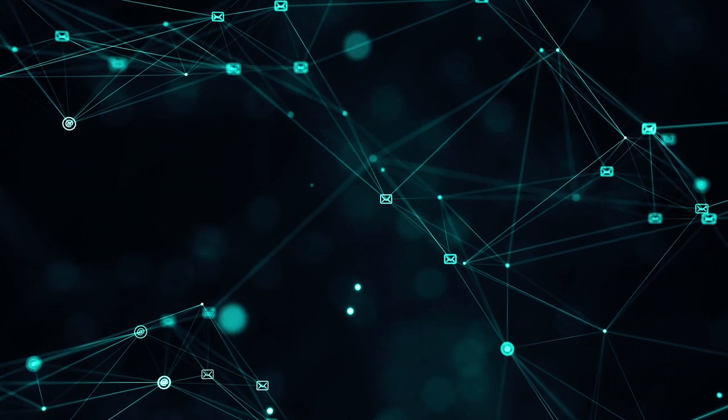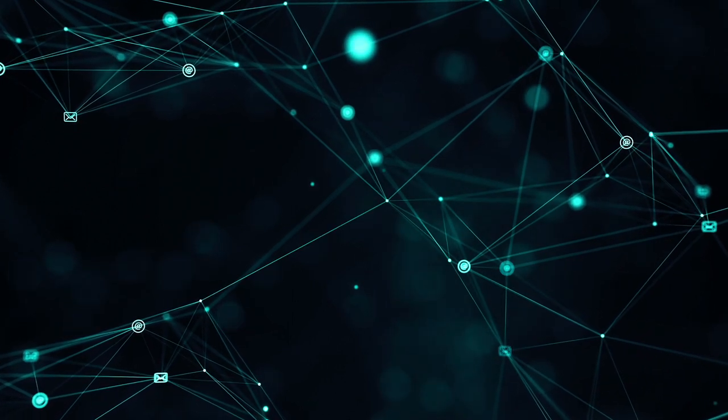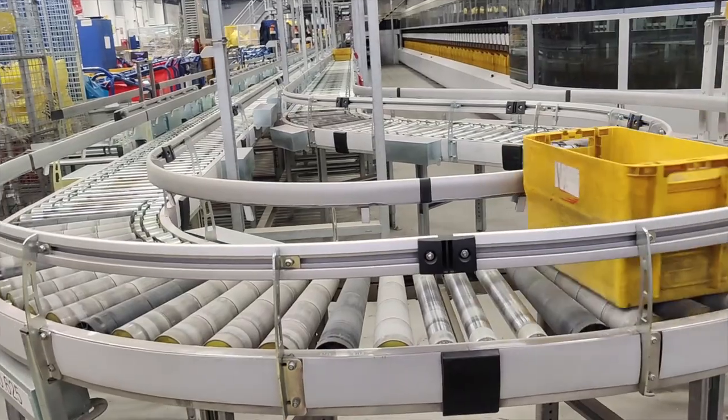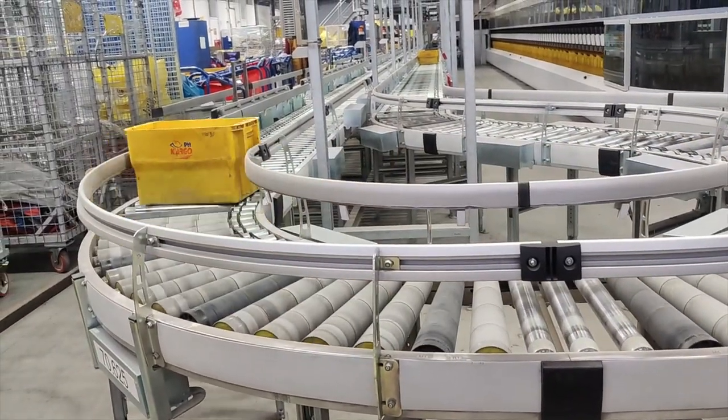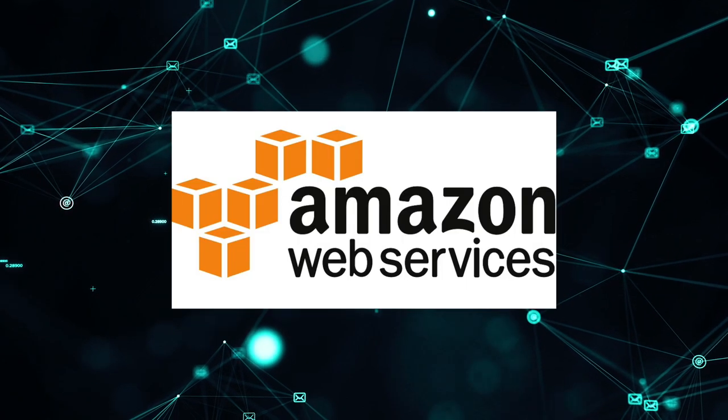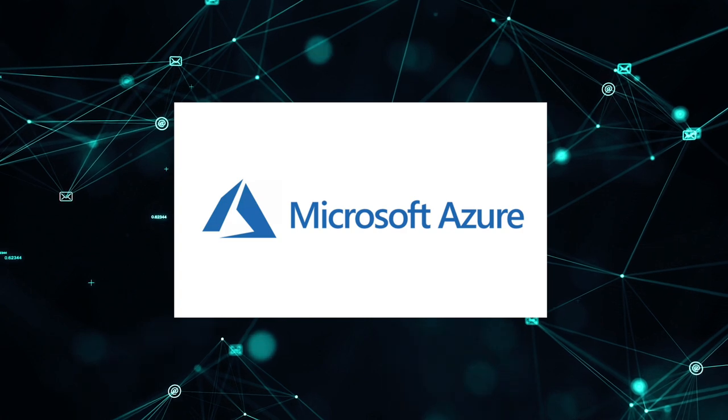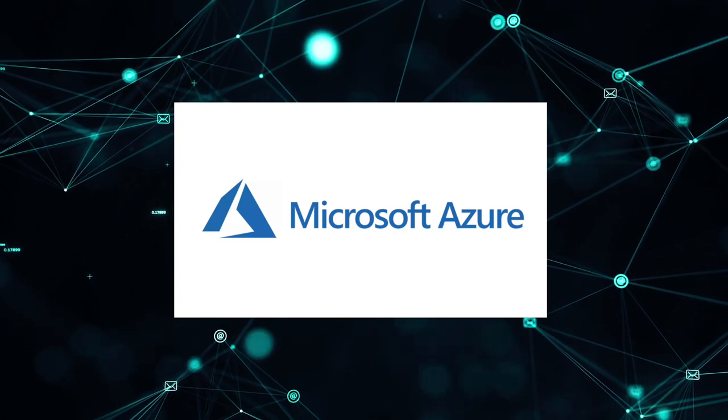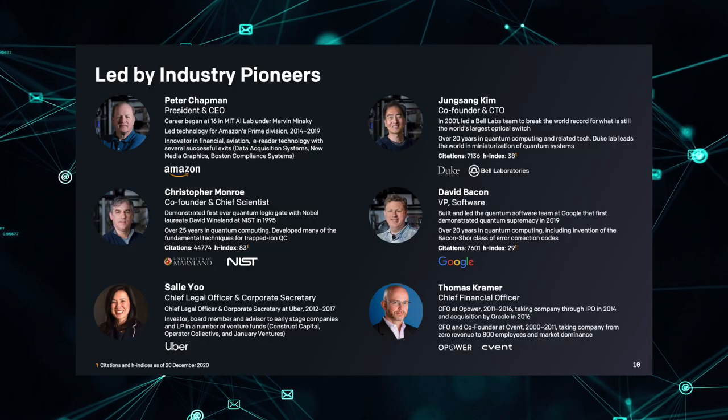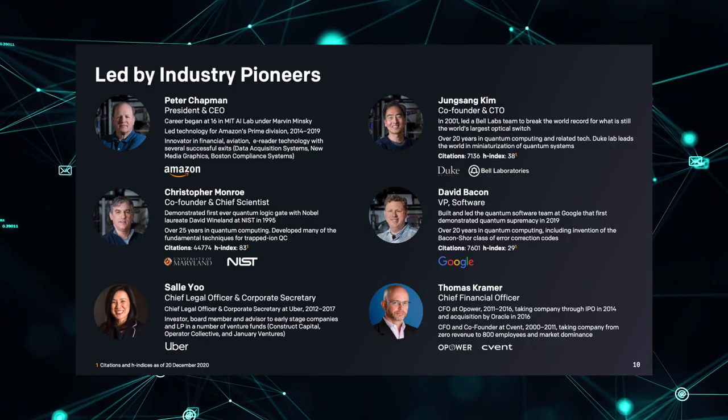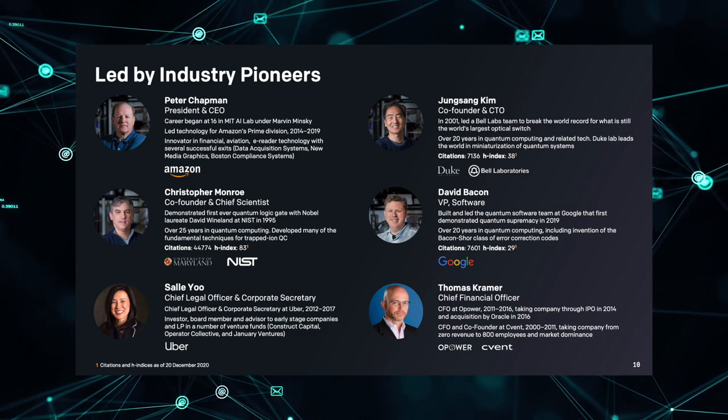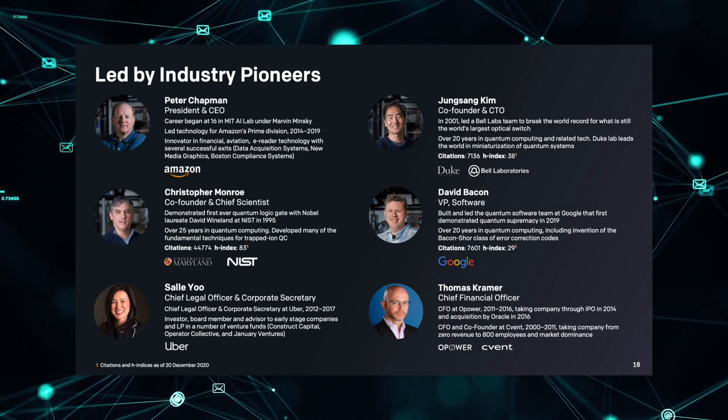IonQ's new 32-qubit system was actually first available to their direct partners across energy, pharmaceutical, and manufacturing via a private beta, and then commercially available on AWS Bracket and Microsoft Azure Quantum in early 2021. They really do have a world-class team. The CEO is from Amazon, and other people in upper management are from Uber and Google as well.